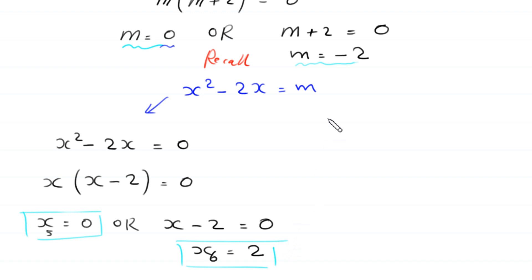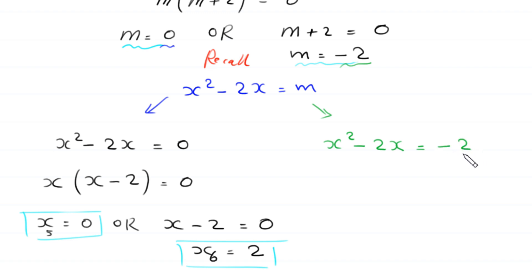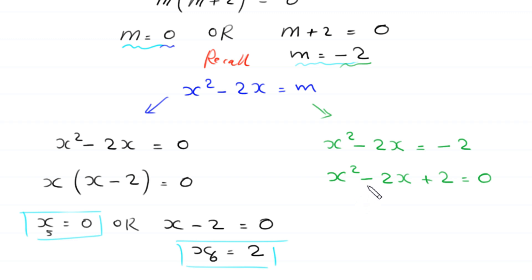When m = -2, the equation becomes x² - 2x = -2. Moving -2 to the left-hand side gives x² - 2x + 2 = 0. This quadratic is not factorable, so we solve using the quadratic formula, where a = 1, b = -2, and c = 2.